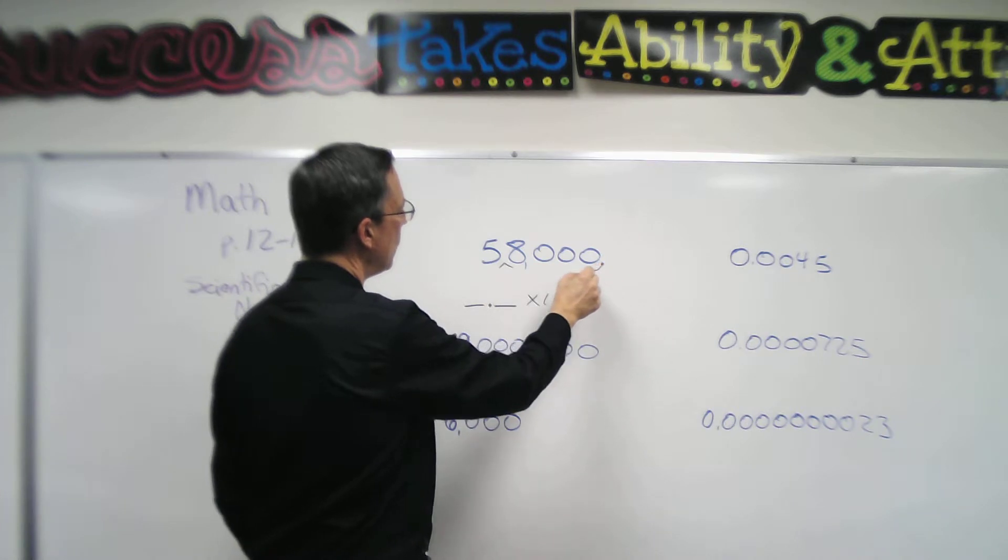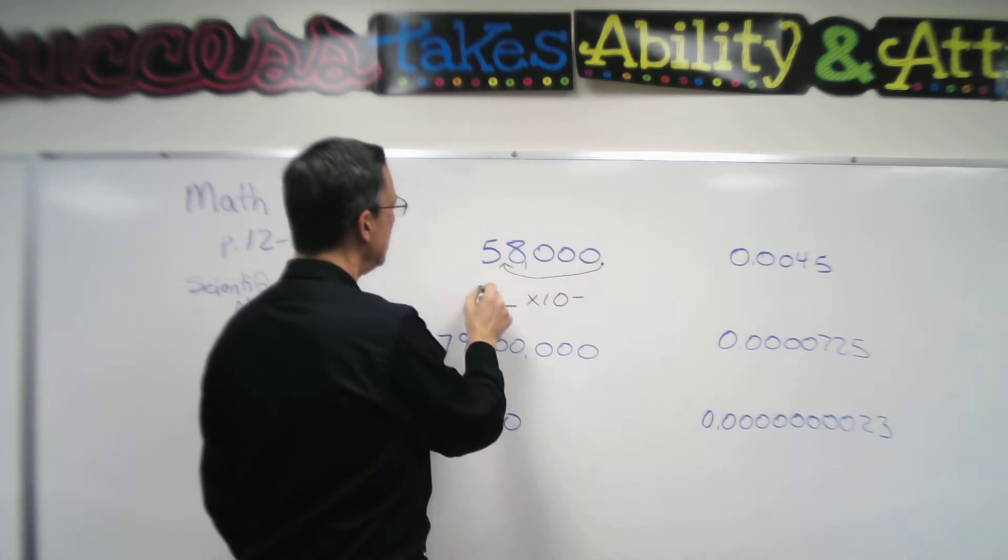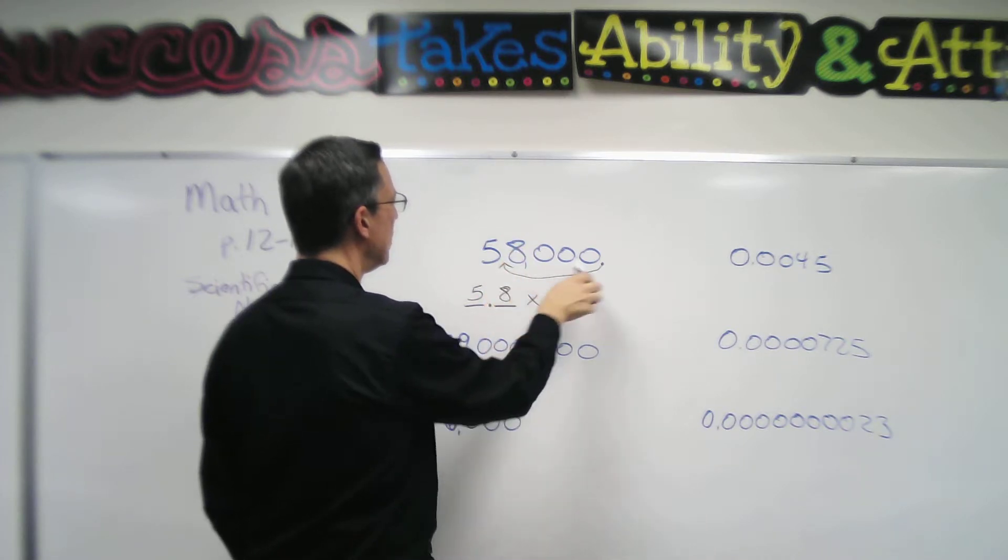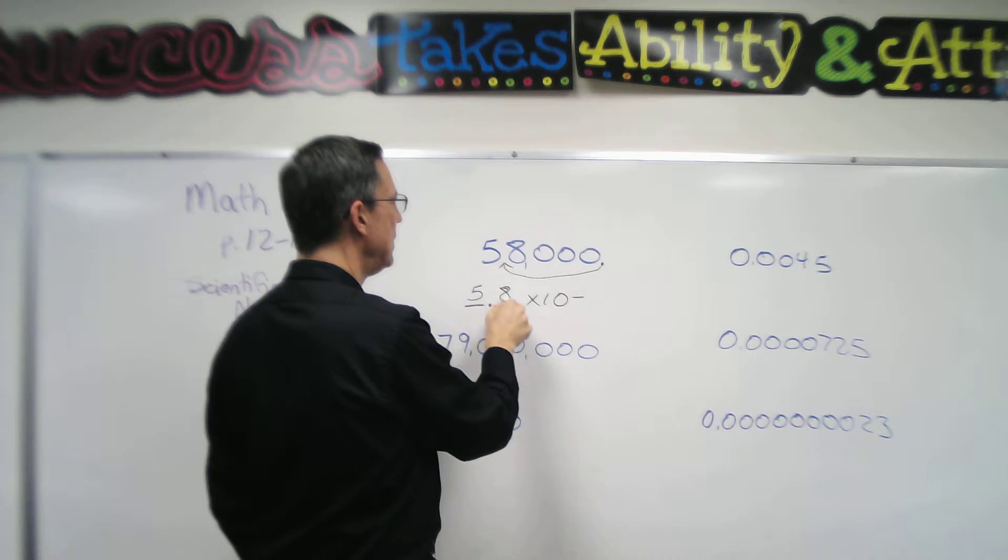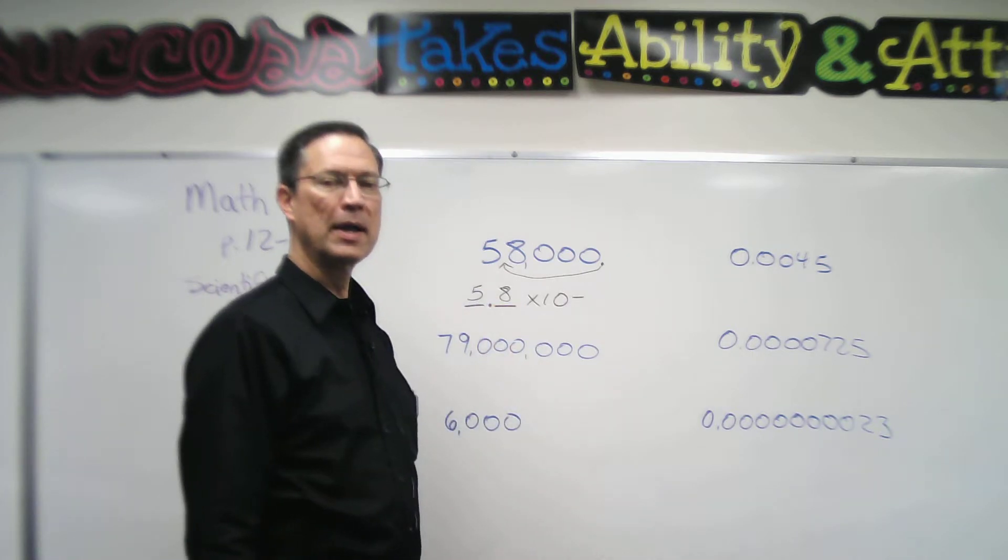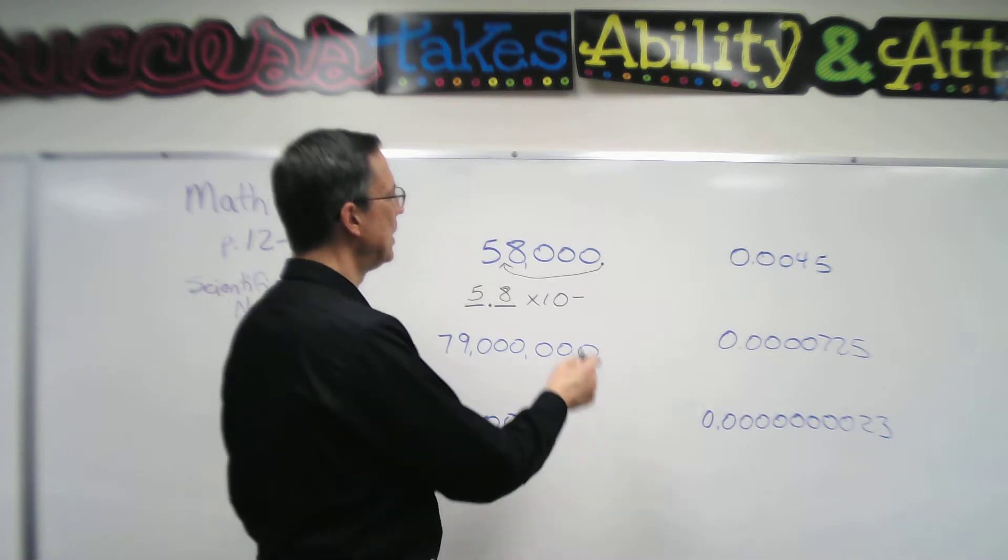The decimal has to go between, or right after I should say, right after the first non-zero digit. So that would be going right to there. So I'm going to write the five, then the decimal. There's an eight that comes after that, so I moved it between the five and the eight.